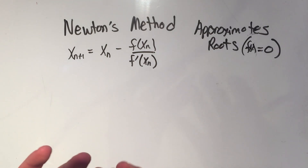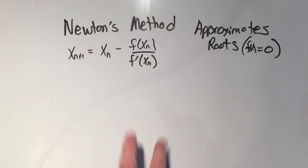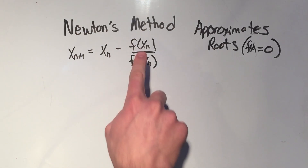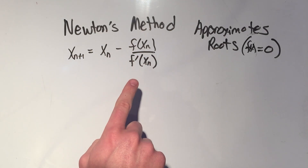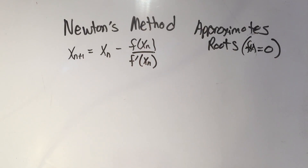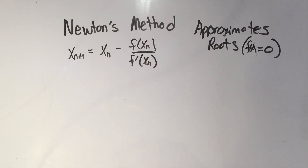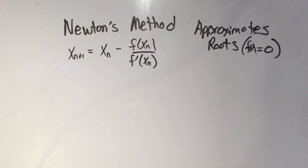Basically you need to pick an x1 to start with. You'll pick x1, plug it into this formula, and that will give you x2. Then you'll plug x2 into this formula, calculate, and you'll get x3.